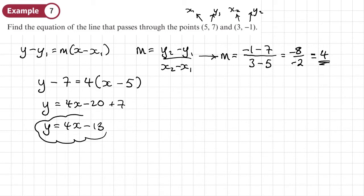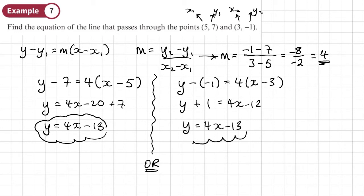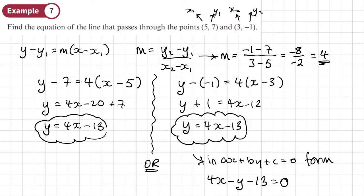To verify, if we instead use the other coordinate with y1 as -1 and x1 as 3, we get y plus 1 equals 4x minus 12, and taking away 1 from both sides gives y equals 4x minus 13 — exactly the same answer. It doesn't matter which coordinate you pick as long as the line passes through it. In ax plus by plus c equals 0 form, the answer is 4x minus y minus 13 equals 0.